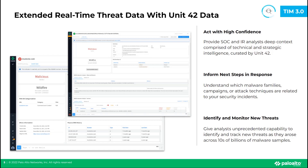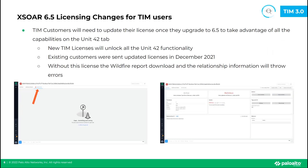If you had Cortex XDR, you could see which agents in your environment reported the file, giving you a list of machines that could be infected. At this point, you could block any external IP addresses related to the malicious file with your firewalls and assess and potentially isolate the impacted machines, thus containing the attack. One thing to keep in mind when upgrading to 6.5 is that the Unit 42 functionality requires customers to update their license. Without it, the Unit 42 functionality will throw errors.